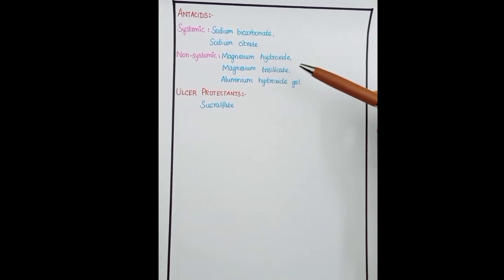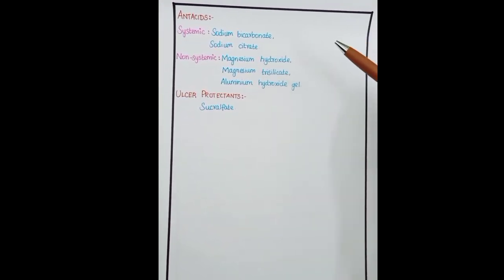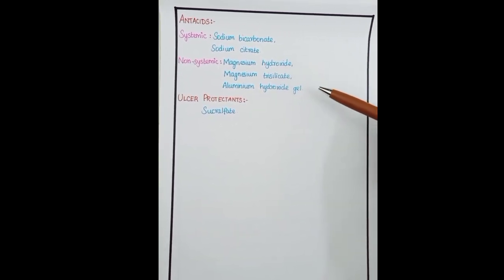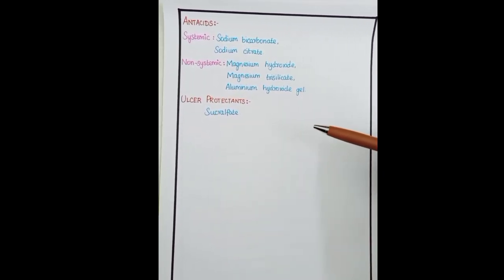Next, coming to antacids. Systemic antacids contain sodium bicarbonate and sodium citrate. Non-systemic antacids contain magnesium hydroxide, magnesium trisilicate, aluminum hydroxide gel. Ulcer protectant: sucralfate.